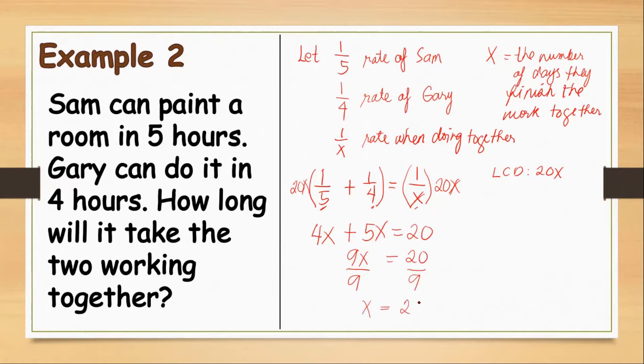So our X equals 20 over 9. Or that is, in fraction, that's 2 and 2 ninths. That's 2 and 2 ninths hours. Or, in hours and minutes, that can be 2.22 hours. That will be our answer for our example number 2.